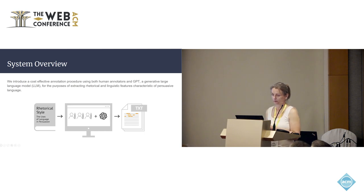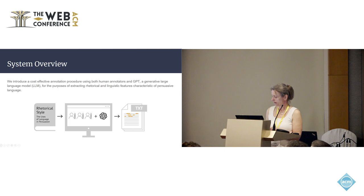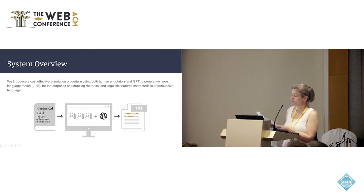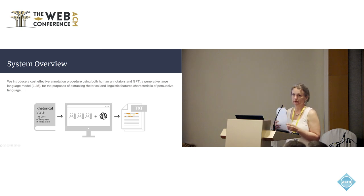A quick overview of the system — we have three phases. First, we turn to the literature on the language of persuasion to generate a novel feature set. We codify those features into a machine-readable format, and we then pay human annotators to label a small subset of our data. Lastly, we use those human annotations to fine-tune GPT to annotate the remaining data.